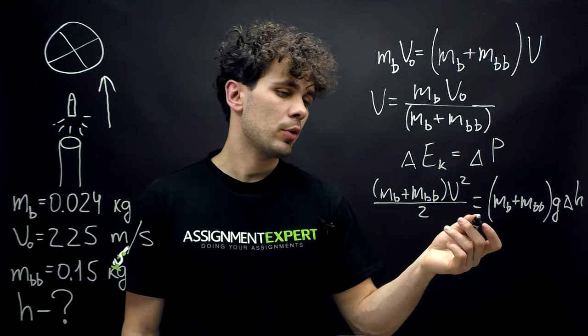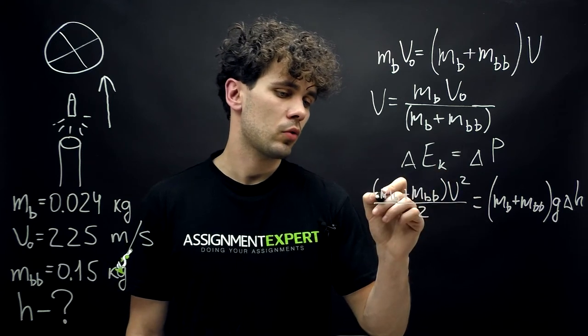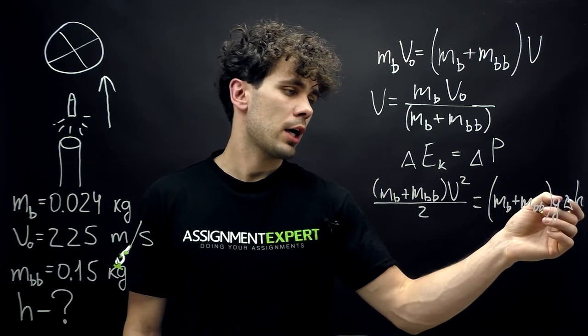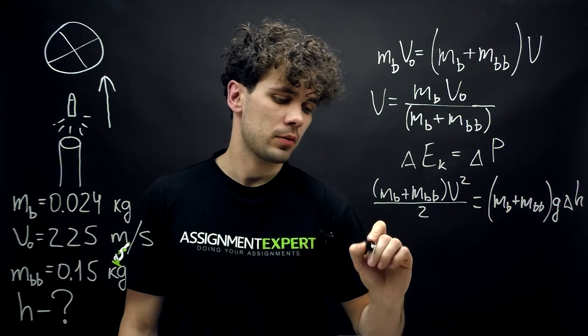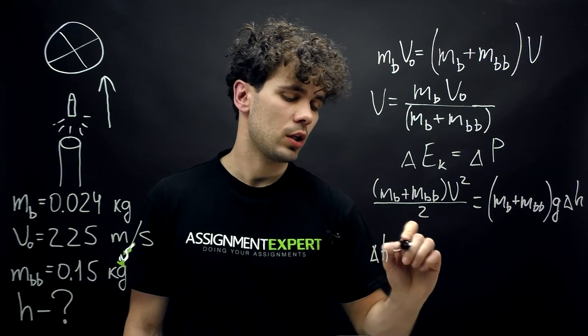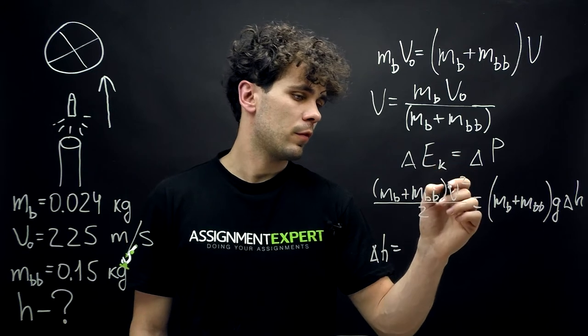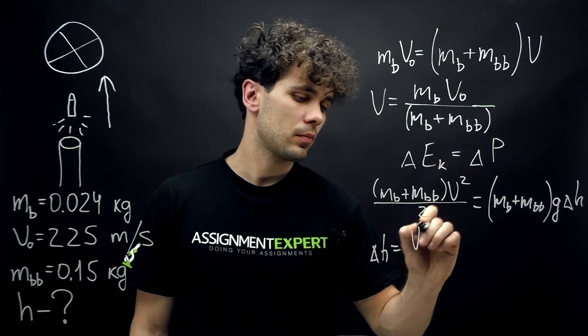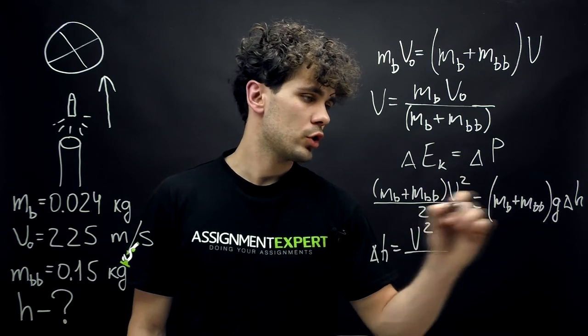And here we can see that we can cancel out the masses and derive the change of the height. Delta H equals V squared over 2 times G.